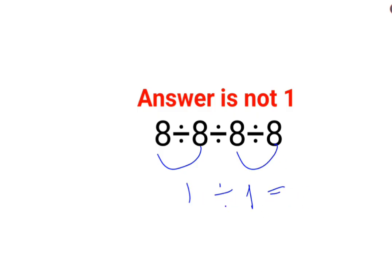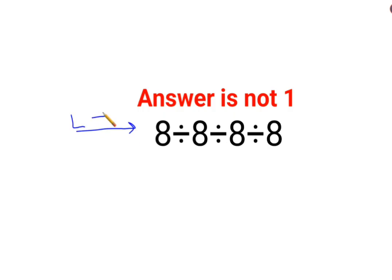No, that is not how these things work in mathematics when you have a division sign or multiplication through and through. You need to follow the rule of left to right. Whatever operation happens first on your left hand side has to be done first.